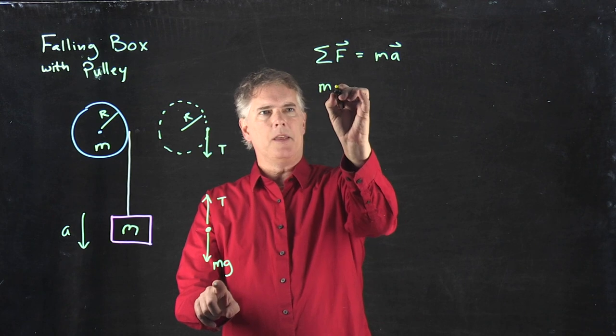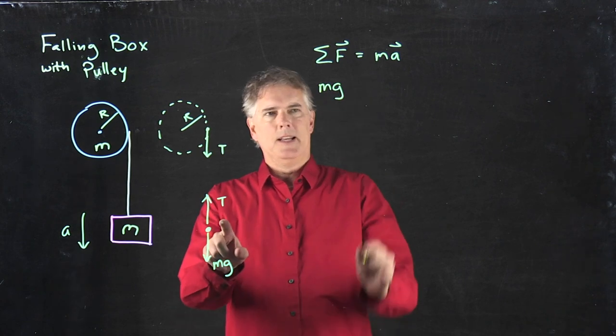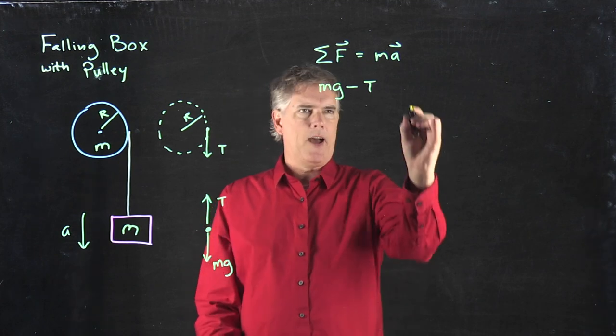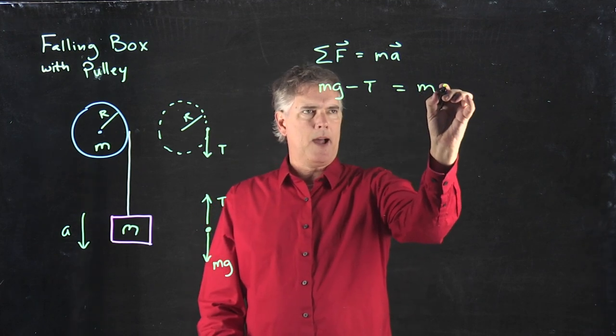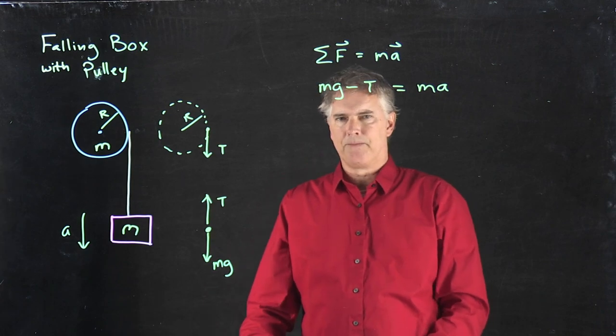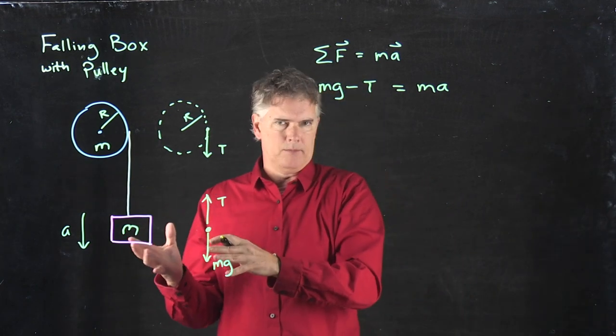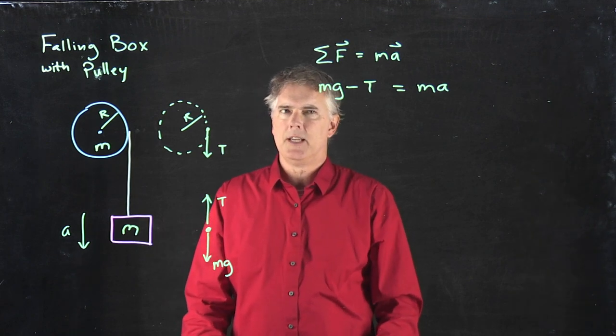mg is in the positive direction. T is in the negative direction. And all of that is equal to the mass times the acceleration. So if we knew T, we'd be done, right? But we don't know T yet. So we have to figure out T.